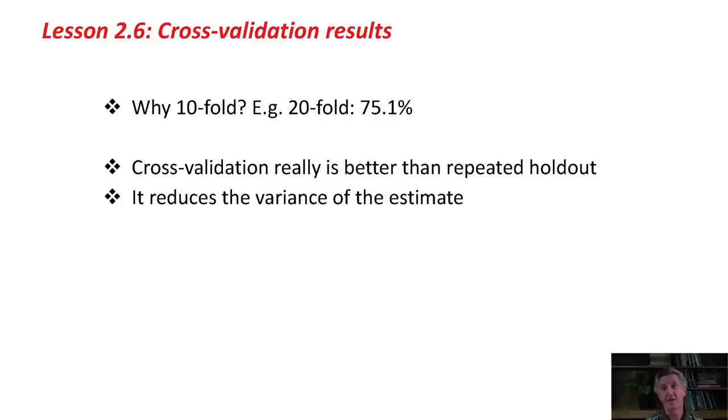Why 10? Why not 20? That's a good question, really, and there's not a very good answer. We'd like to use quite a lot of data for training, because in the final analysis, we're going to use the entire data set for training. It would be good to use, if we're using 10-fold cross-validation, then we're using 90% of the data set for training. Maybe it would be a little better to use 95% of the data set for training with 20-fold cross-validation.